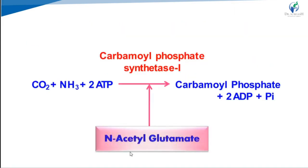In this reaction, carbon dioxide and ammonia condense with the help of 2 ATP in the presence of carbamoyl phosphate synthase 1 and N-acetylglutamate to form carbamoyl phosphate. The 2 ATP are converted to 2 ADP and 1 inorganic phosphate is liberated.